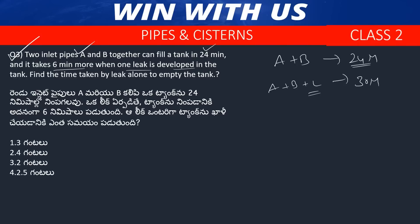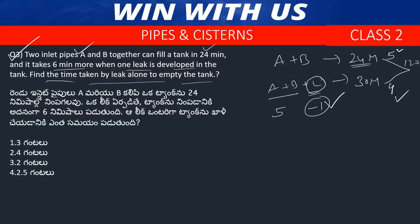Find the time taken by the leak alone to empty the full tank. LCM of 24 and 30 is 120. Efficiency of A plus B is 5; efficiency of A plus B plus leakage is 4. So leakage efficiency is 4 minus 5 = minus 1. With total work = 120 and leak efficiency = 1, the leak alone empties the tank in 120 minutes.